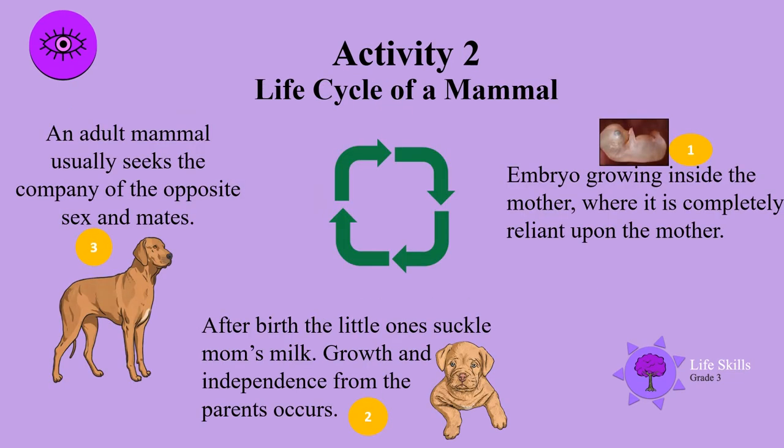The life cycle of a mammal. Stage 1: the embryo grows inside the mother, where it is completely reliant upon the mother. Stage 2: after birth, the little ones suckle mom's milk, and growth and independence from the parents occurs. Stage 3: an adult mammal usually seeks the company of the opposite sex and mates.